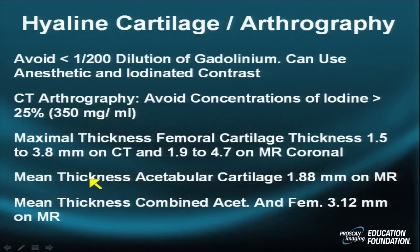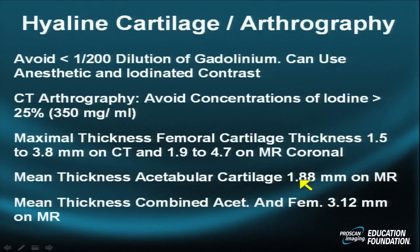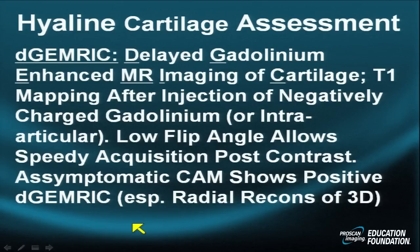The maximal thickness of femoral cartilage is 1.5 to 3.8 mm on CT and 1.9 to 4.7 mm on coronal MRI. The femoral cartilage is thicker toward the center of the femoral head. The mean thickness of acetabular cartilage is 1.88 mm on MR, getting thicker laterally. When eyeballing a coronal MRI, the mean combined acetabular and femoral cartilage thickness is 3.12 mm — approximately 3 mm.